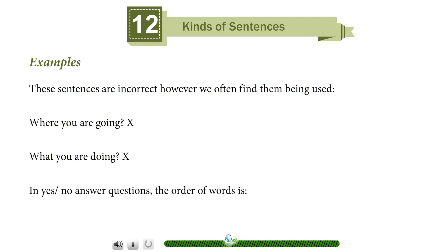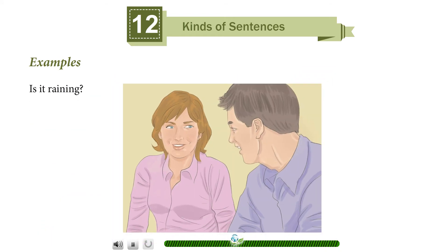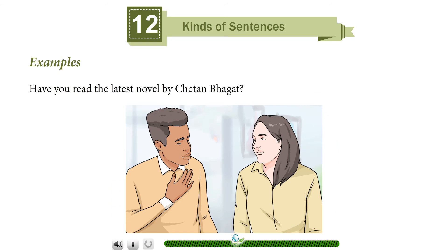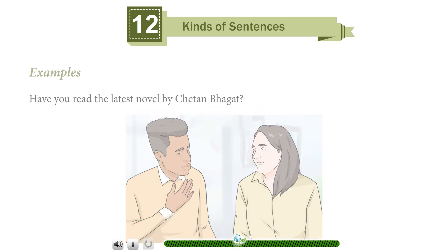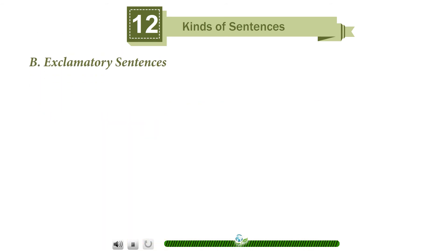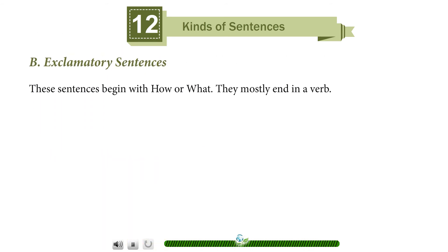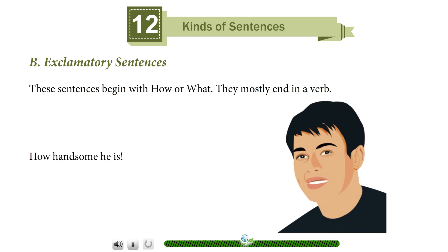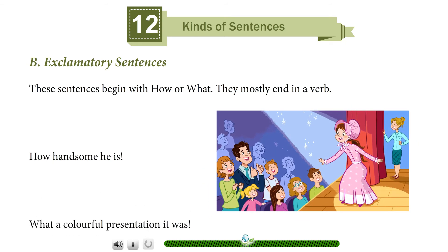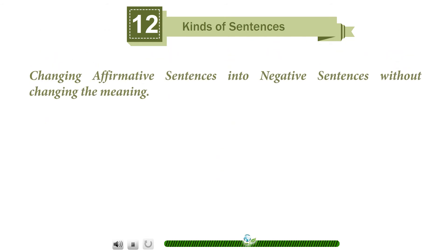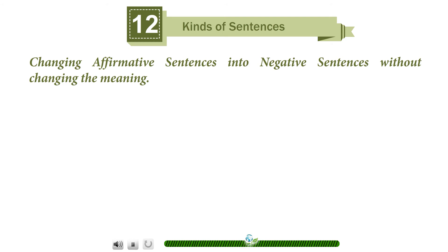In yes/no answer questions, the order of words is: helping verb, noun, verb, or pronoun. Example: 'Is the training...?' 'Have you read the latest novel by Chetan Bhagat?' Exclamatory sentences begin with 'how' or 'what' and mostly end with a verb. Examples: 'How handsome he is!' 'What a colorful presentation it was!'